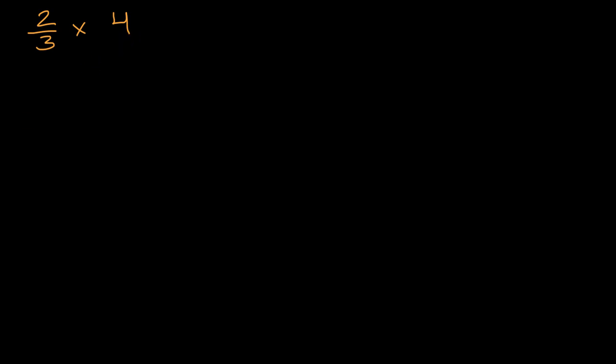All right, now let's work through this together and to help us, I will use a number line and let's say that each of these hash marks represent a third. So this is zero, this is one third, two thirds, three thirds, four thirds, five thirds, six thirds, seven thirds, eight thirds, and nine thirds.